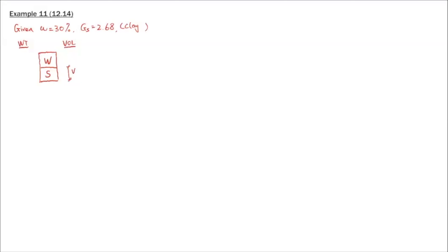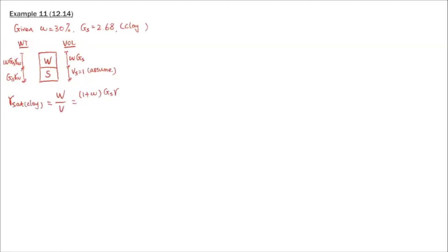I can assume Vs equals 1. We know specific gravity is 2.68, so we can get the weight side — that's basically Gs times gamma water. Moisture content is given, so the weight of water is moisture content times weight of solids. Once you know the weight of water, the volume is weight of water divided by the unit weight of water. So if you're familiar with this diagram, you can fill it out relatively quickly given this information, then calculate the saturated unit weight.